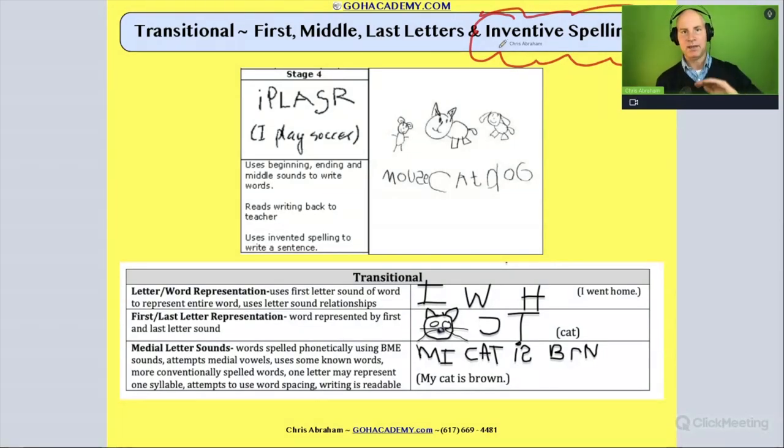Initially, when we think of inventive spelling, phonetic spelling, the child may be representing the initial sound in a word, then they might represent the initial and last sound in the word. So look at the initial letter that matches up with the initial sound. Look at the end letter that matches up with the end sound. Eventually, they start to work on the medial vowel or middle vowel sound.